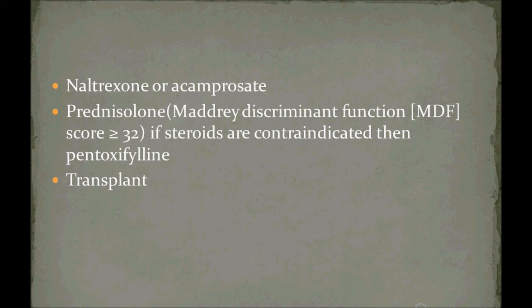Medications include naltrexone or acamprosate. The Maddrey Discriminant Function score is key: if the score is greater than 32, use steroids. If there is any contraindication to steroids, go ahead with pentoxifylline. The ultimate and best treatment is liver transplant.